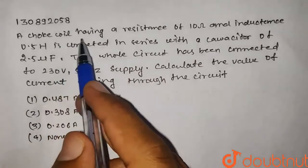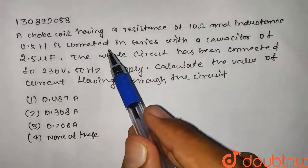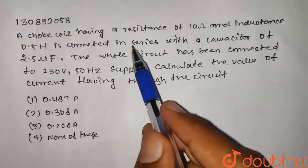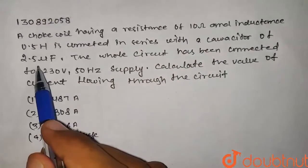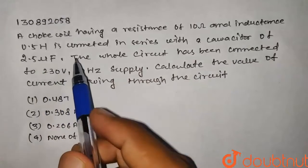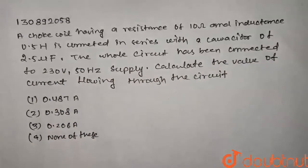Hello guys, a Choke Coil having a resistance of 10 ohm and an inductance of 0.5 henry is connected in series with a capacitor of 2.5 microfarad. The whole circuit has been connected to a 230 volt 50 hertz supply. Calculate the value of the current flowing through the circuit.